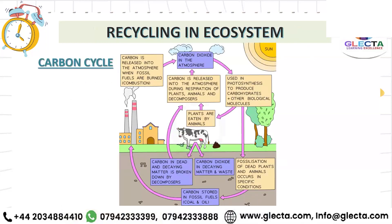One important cycle in our ecosystem is the carbon cycle. Plants photosynthesize - they take carbon dioxide from the atmosphere using sunlight to produce carbohydrates. When animals eat plants, carbon moves from plants to animals. Animals respire and release carbon dioxide back to the environment. When animals die, their bodies dissolve into the soil; decomposers in the soil release the carbon dioxide back to the air. Waste products from animals also contain carbon, which microorganisms release back to the environment as carbon dioxide. Carbon is also released from factories burning fossil fuels.